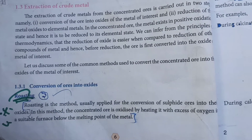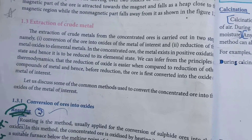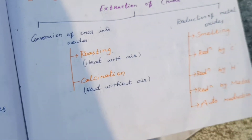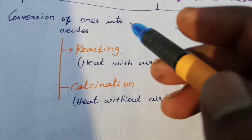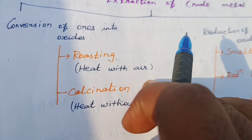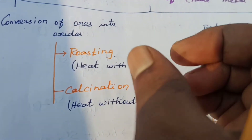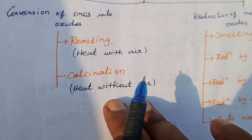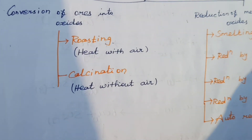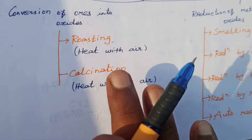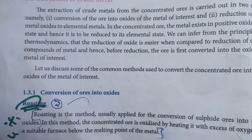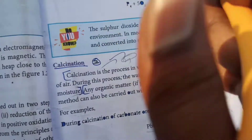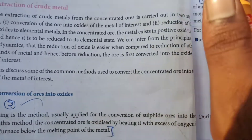The first step is the conversion of ore into oxides. The two heating processes are roasting and calcination. Roasting is heating with air, and calcination is heating without air.